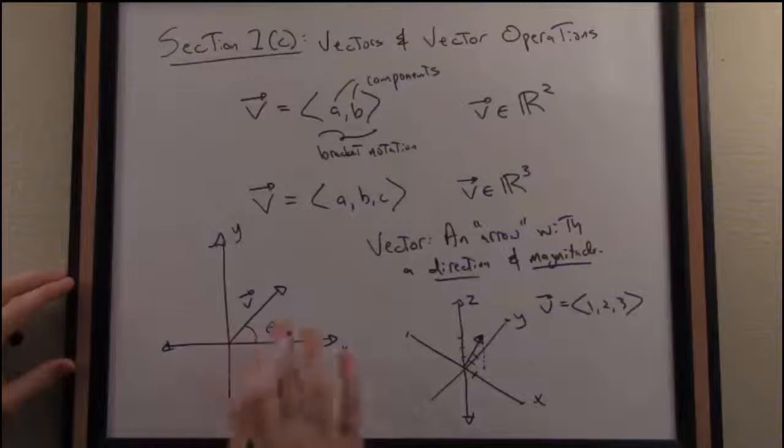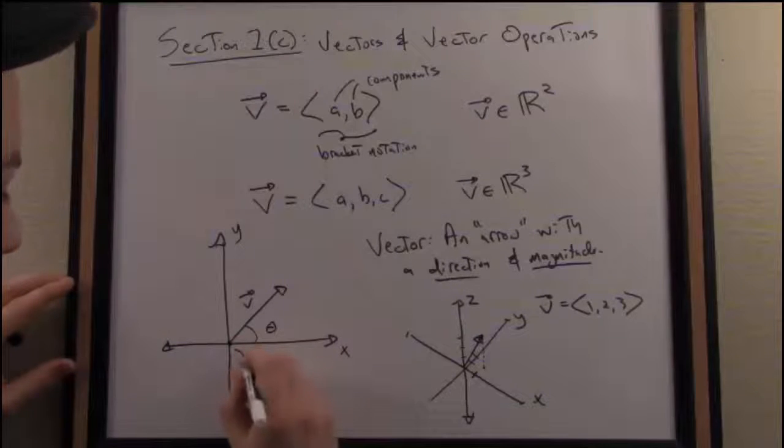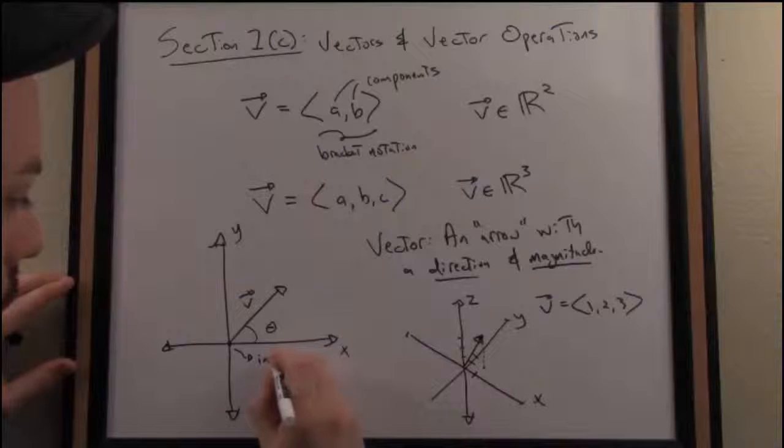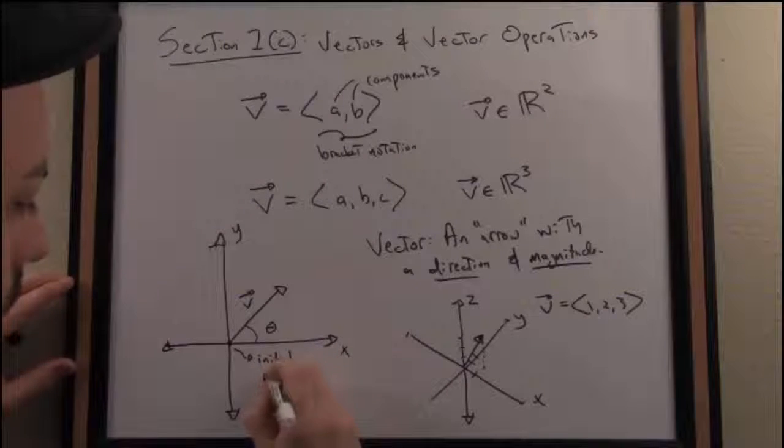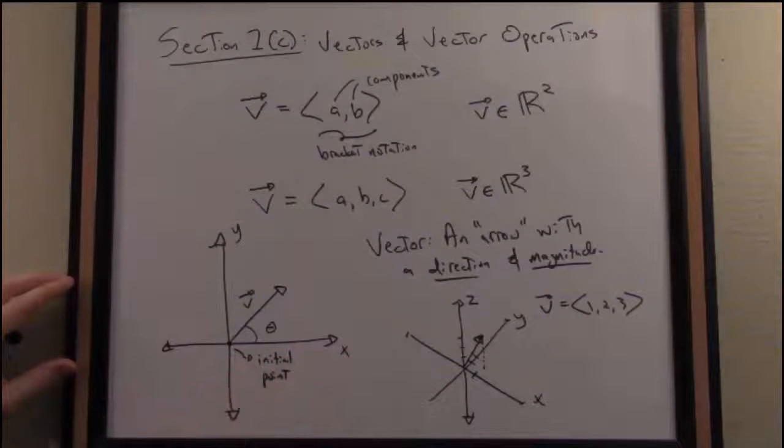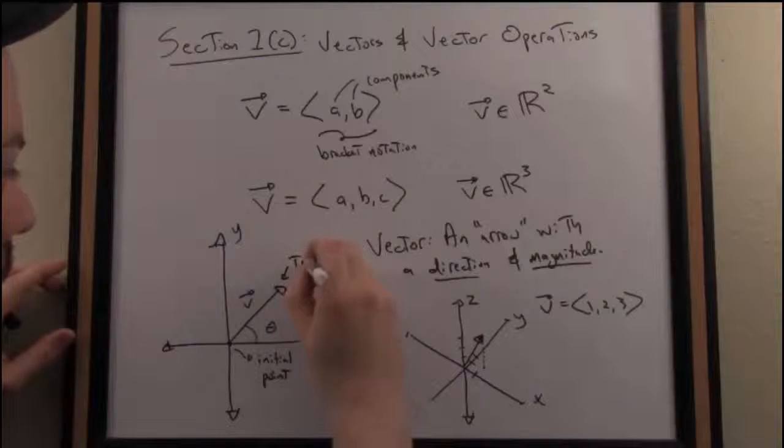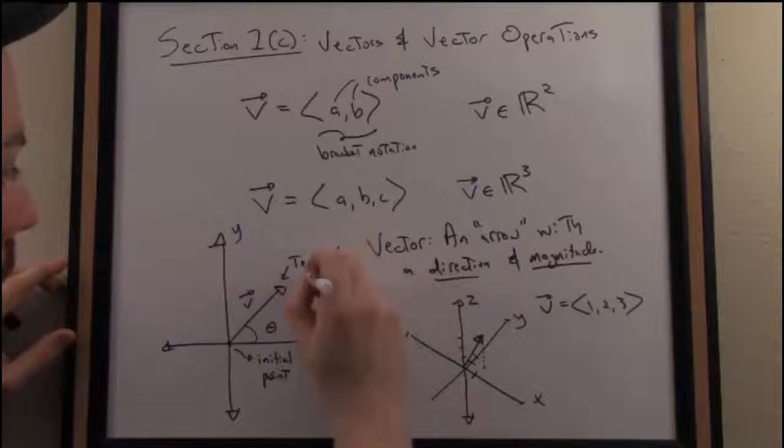When we have a vector, because it has a direction, we typically specify where it begins. So this would be called the initial point of the vector. In this case, this is a vector with initial point at the origin. And this point where it ends is usually referred to as the terminal point of the vector.